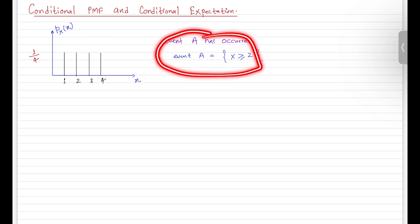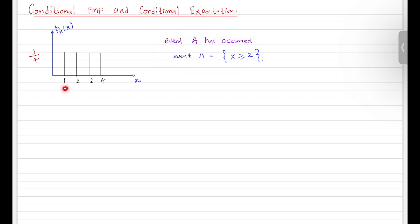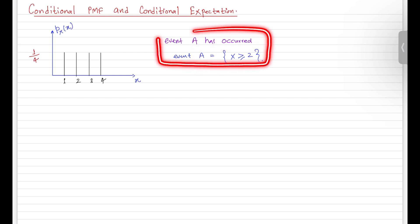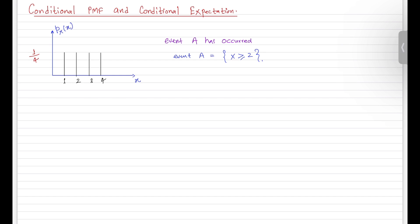Given this event A, if I told you that random variable X is taking the value 1, is that correct? No. Random variable cannot take the value 1 as per how we defined event A. So in the revised or conditional model, X can only take the value 2, or 3, or 4, since X must be greater than or equal to 2.